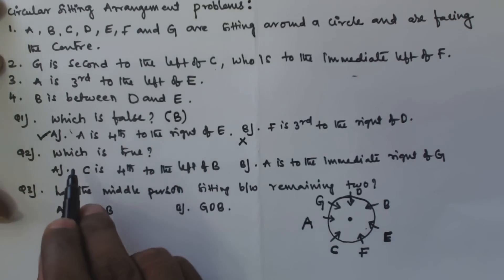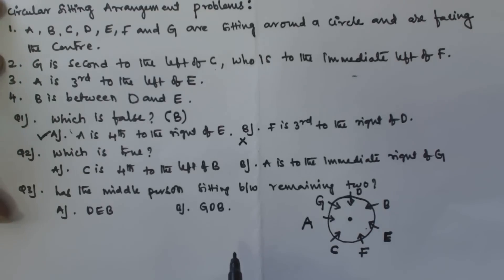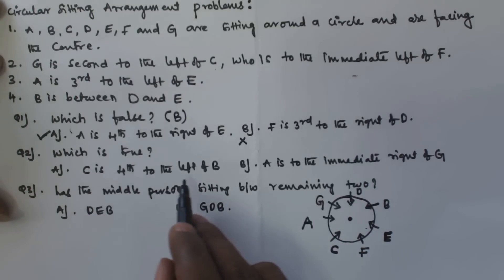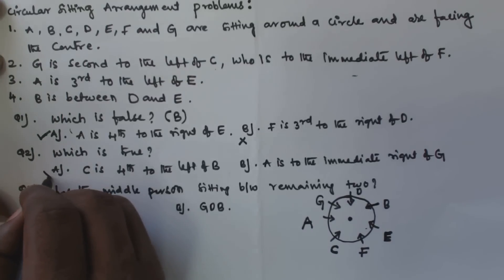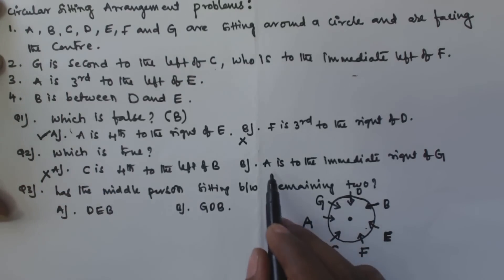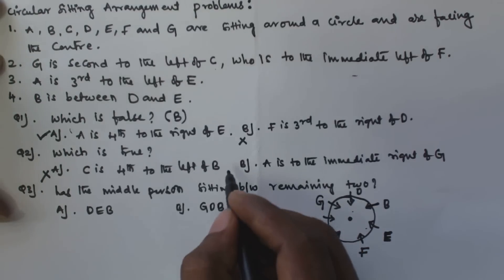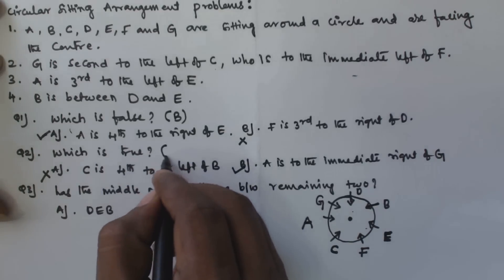For question two, checking option A: C is fourth to the left of B. Counting four positions to the left of B, we get C — but actually C is third to the left of B, so option A is false. Checking option B: A is to the immediate right of G. G is here, A is next to G on the right, so option B is true. The answer for question two is B.